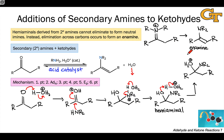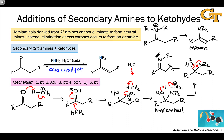That beta elimination step also happens in the imine formation mechanism — beta elimination of water, really facilitated and assisted by the lone pair on nitrogen. Just as we saw in the imine formation case, this step produces an iminium ion. But there's an important difference between this iminium ion generated starting from a secondary amine and the one generated starting from a primary amine.